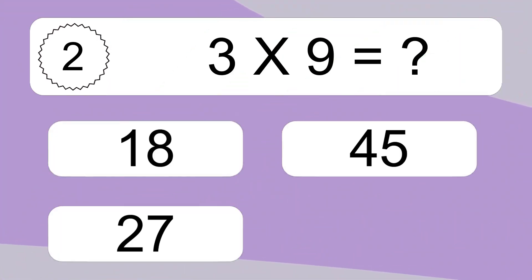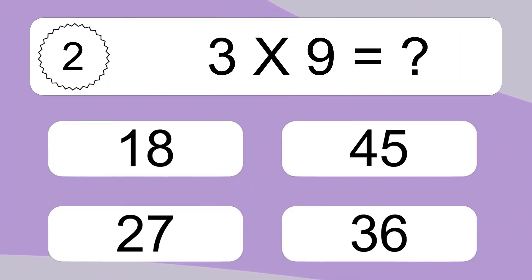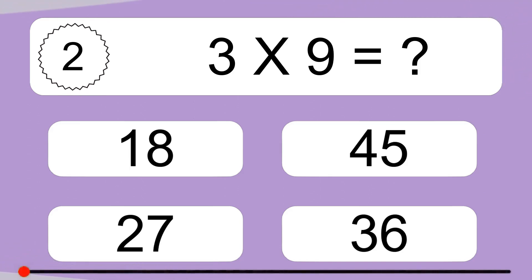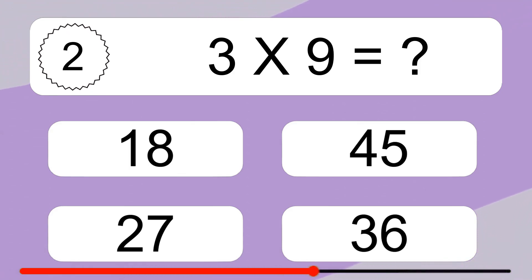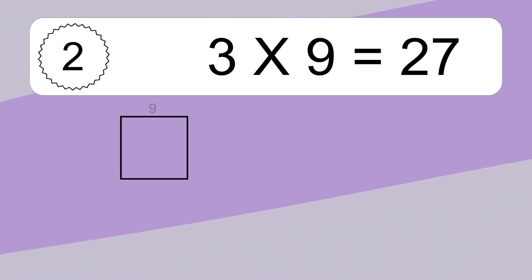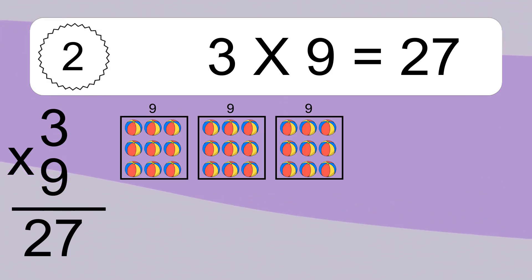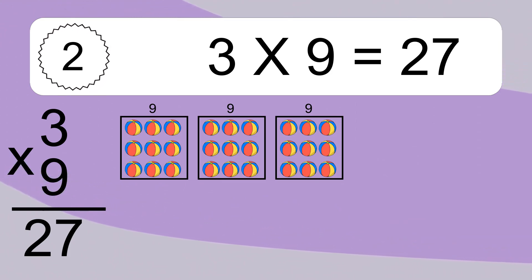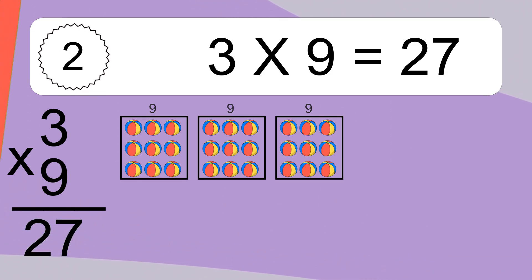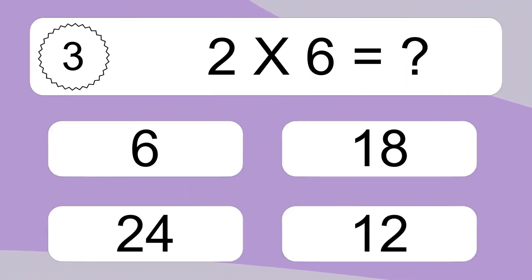3 times 9 equals what? 3 times 9 equals 27. We have 3 boxes, and each box has 9 colorful balls inside. If you count all the balls in all the boxes together, you will have 3 times 9 balls. This equals 27 balls.